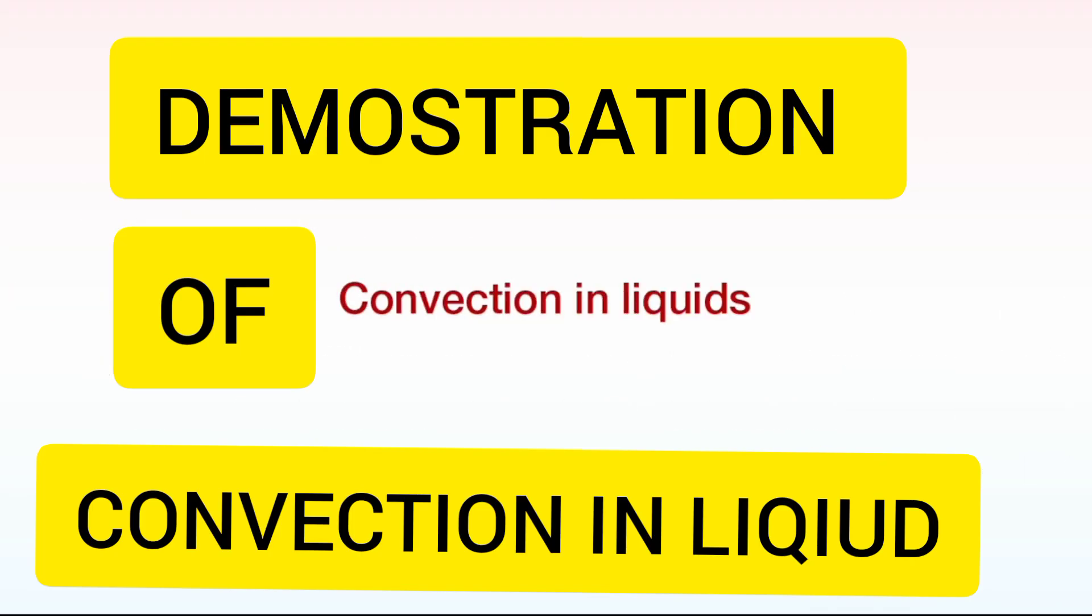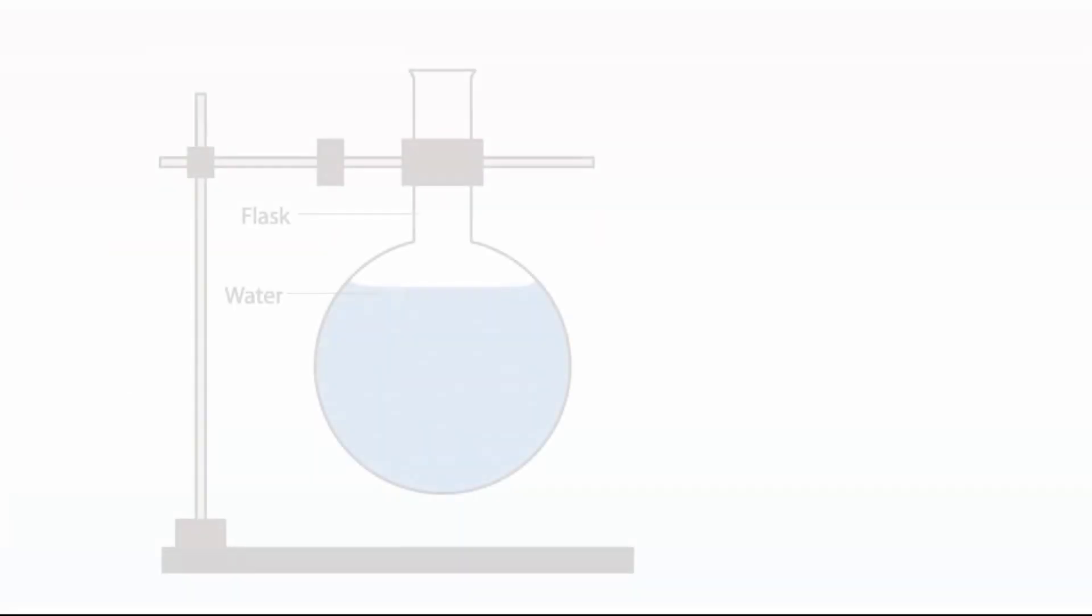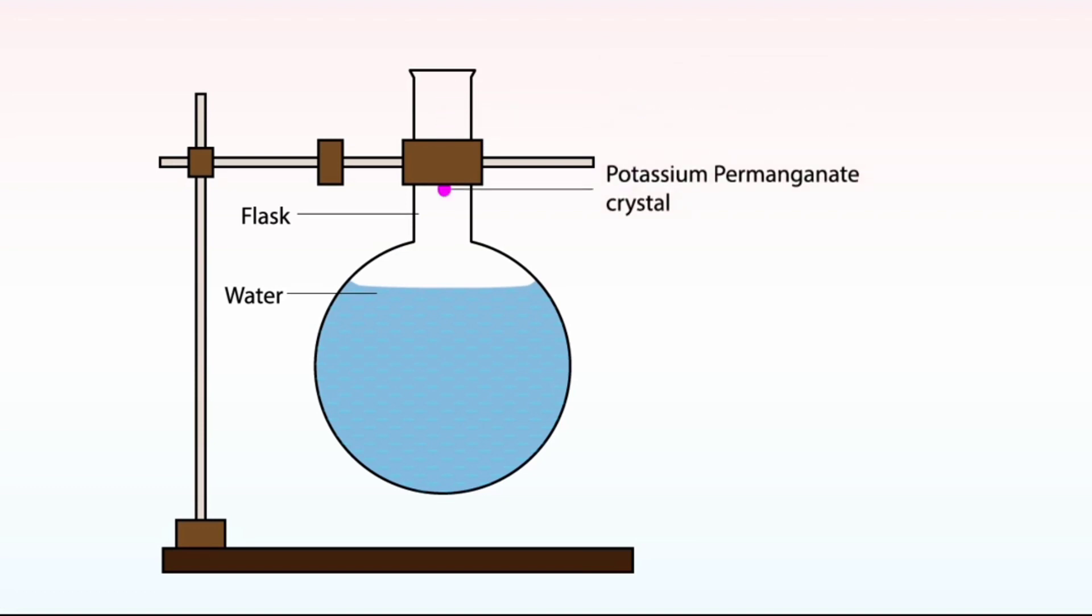Now let's look at convection in liquids. Convection in liquids can be demonstrated by dropping a small crystal of potassium permanganate down the center of a flask containing water.